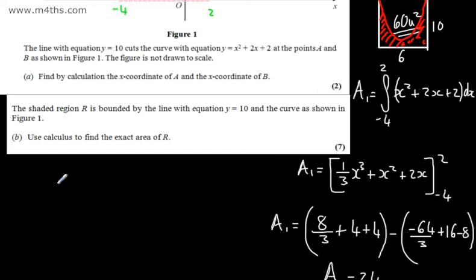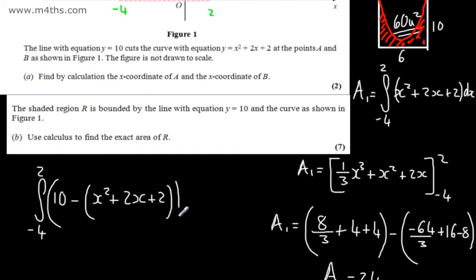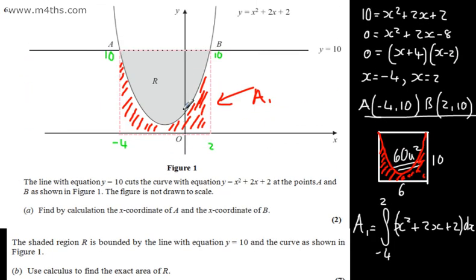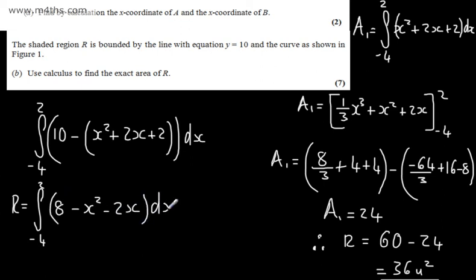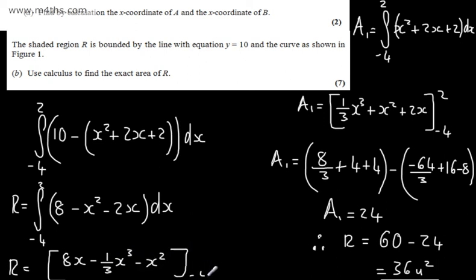Alternatively, we can write R as the integral from negative 4 to 2 of (10 minus (x squared plus 2x plus 2)) dx. Simplifying the integrand: 10 minus 2 gives 8, so we integrate (8 minus x squared minus 2x) dx. This gives 8x minus (1/3)x cubed minus x squared, evaluated from negative 4 to 2.